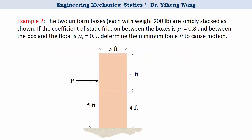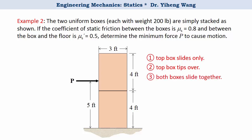There are four possible motions. First, the top box moves only — it slides on the bottom box while the bottom box stays static. Second, the top box tips over while the bottom box stays static. Third, both boxes slide together. And lastly, both boxes tip over together. We are going to calculate the required force P for each of these four scenarios and then compare the results to decide the answer.